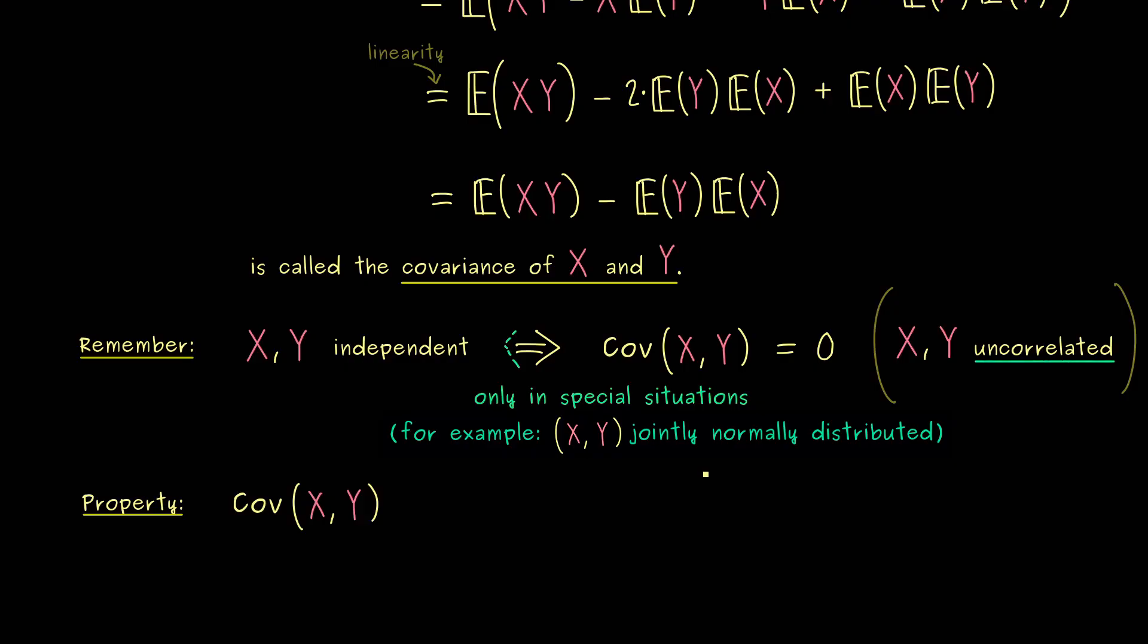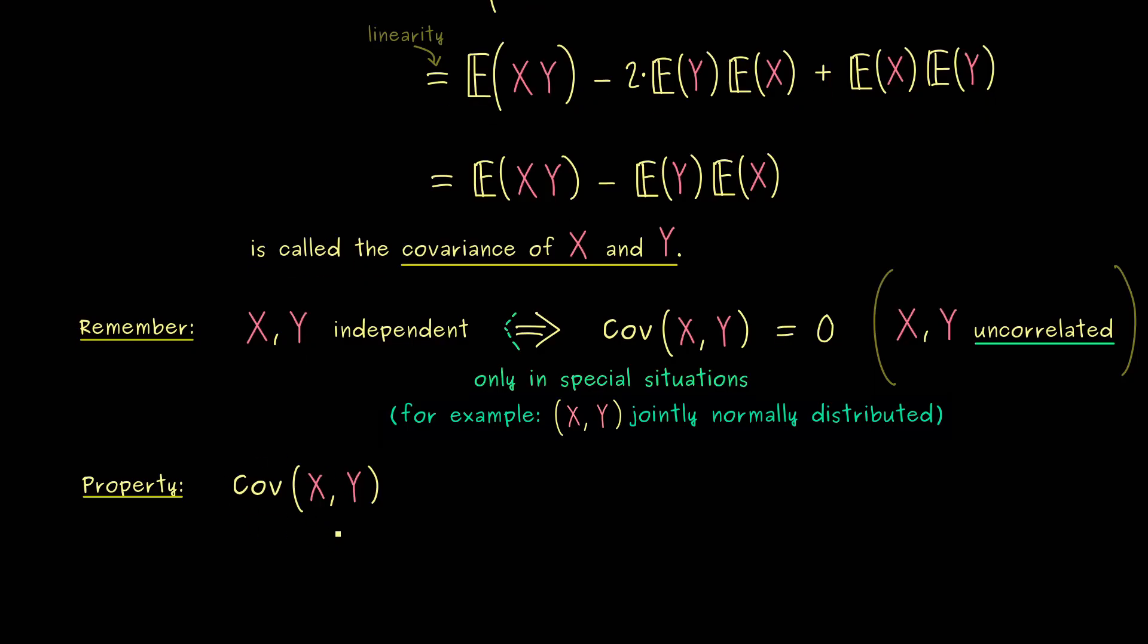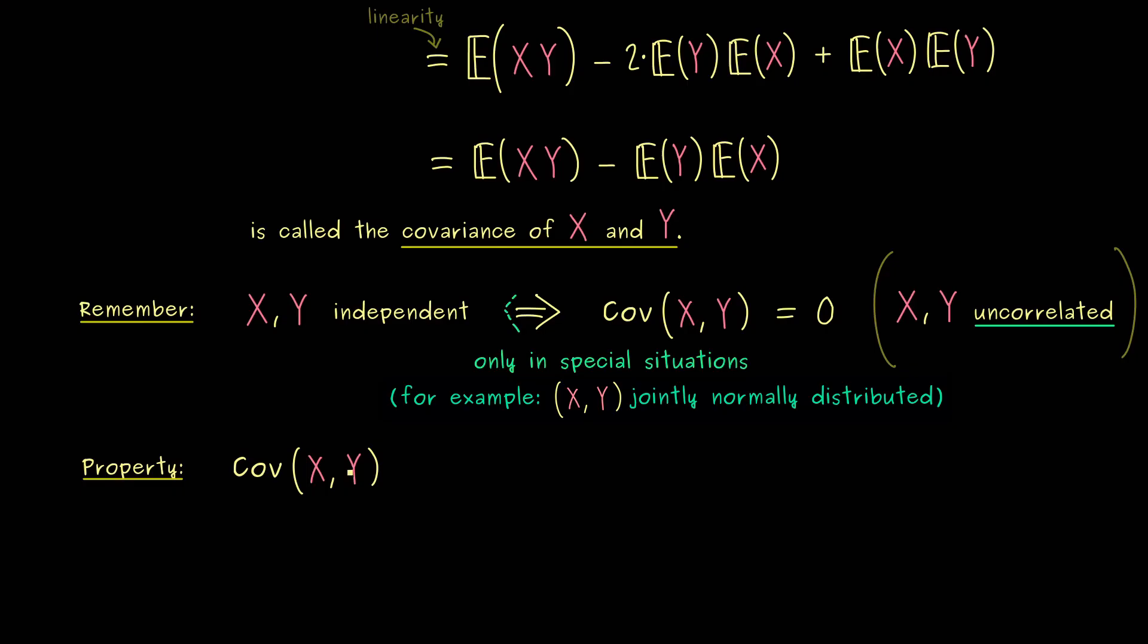Ok, then back to this property here, and maybe you have already noticed, the covariance is nothing else than the variance, if we put in the same random variable. Therefore, we can answer the following question, what is bigger, the covariance squared or the two variances multiplied?